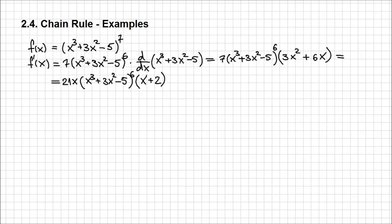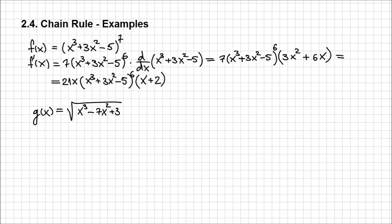Let's take one more example, and I'm going to consider the function g of x, which is equal to the square root of x to the power 3 minus 7x squared plus 3. Once again, what you notice here is that if you look under the square root, we are dealing with a polynomial expression a little more complex than just the variable x. But applying the chain rule, this is going to be very easy to differentiate — the same way we approached roots of simple functions in the past.